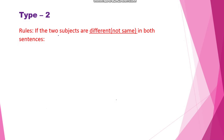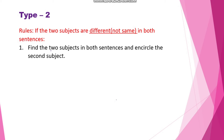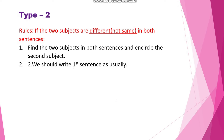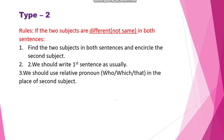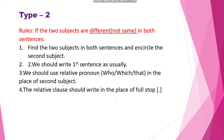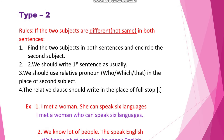Here we write the subject of the first sentence, then the relative clause, then the predicate. Next, let's discuss Type 2. If the two subjects are different — not the same in both sentences — we should follow these rules. First, find the two subjects in both sentences and encircle the second subject. Second, write the first sentence as usual. Third, use the relative pronoun who, which, or that in place of the second subject.